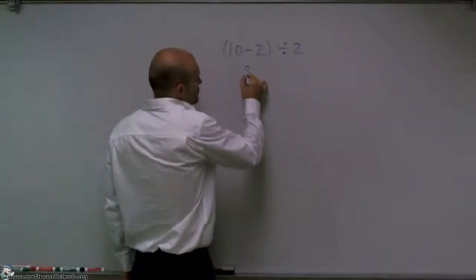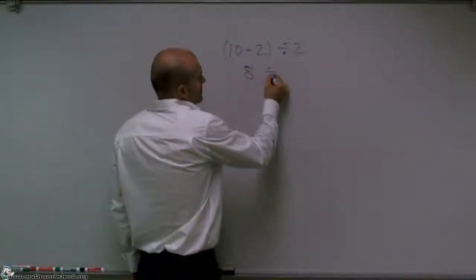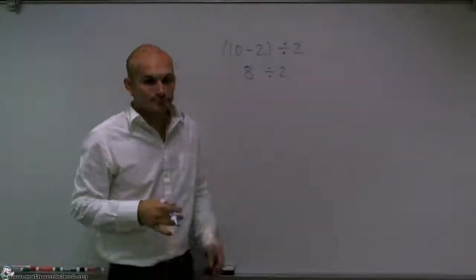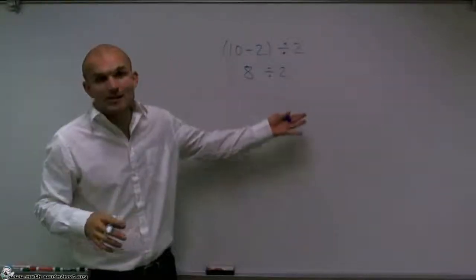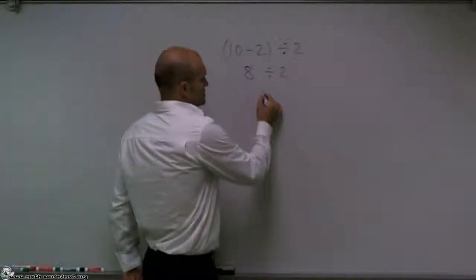10 subtract 2 leaves me 8 divided by 2. Now, the only other operation I can do is 8 divided by 2, which leaves me 4.